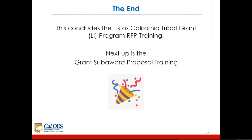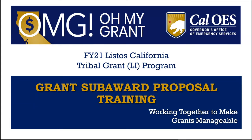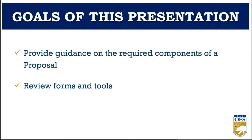This concludes the Listos California Tribal Grant LI program RFP training. Next up is the grant subaward proposal training administered by William Chan, one of our program specialists in the Listos unit. Thanks, Waheeda. My name is William Chan, I'm the program specialist with the Listos Grants Unit. Today we are going to give a presentation on the grant subaward proposal process, providing guidance on the required components of a proposal and familiarizing you with available tools.